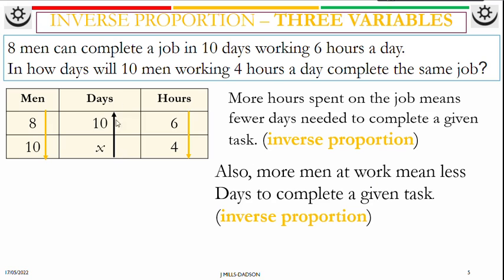Start the equation from X over 10. You should equal to - is going down, so that should be eight over 10, times by going down, six over four. Then you work it out for X.